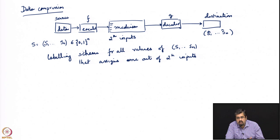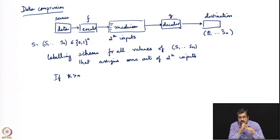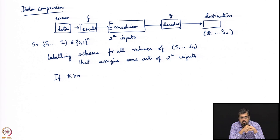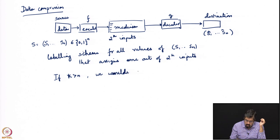Let us now think about where the difficulty lies. What would happen if k were greater than n? If k is greater than n, this problem would be rather easy, because there are 2^n possible books and 2^k slots, and the slots outnumber the books. So every book would get a unique slot, and we would never have an error.